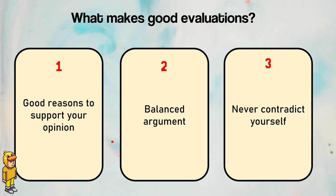Second, it must be a balanced argument. If you want to say something is effective, you have to tell both sides of the story — it cannot be that it is fully effective and never fails. A balanced argument means telling me both the advantages and the disadvantages of a particular mitigation strategy.